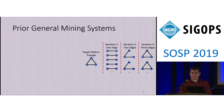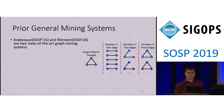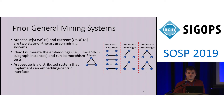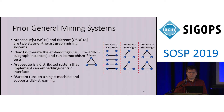Fortunately, there has been some work in the systems community to develop general systems for the graph mining problem. Arabesque and Rstream use a clever database-like idea to build up subgraph embeddings and test if they can eventually form instances of a target pattern. Each step grows the embeddings by an edge according to a table join on the vertices. Arabesque implemented this very general approach in distributed memory, and then Rstream further improved it by streaming data from the disk on a single machine.